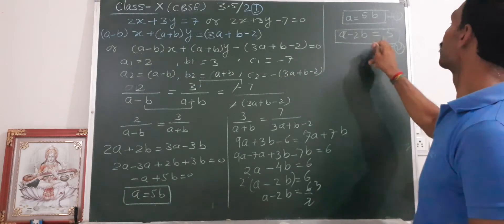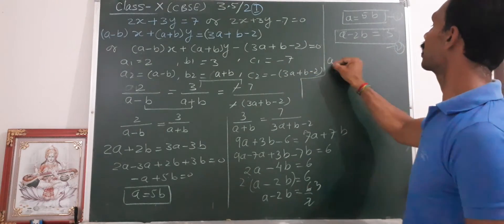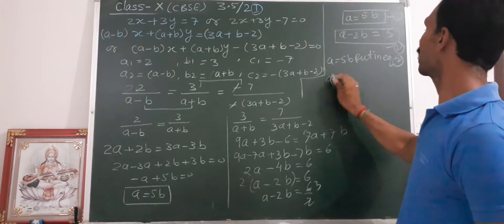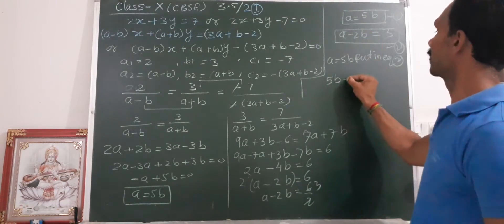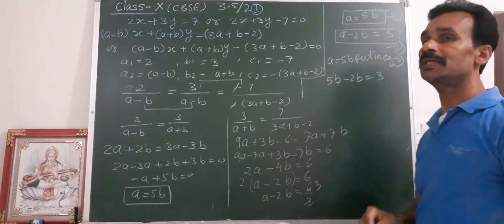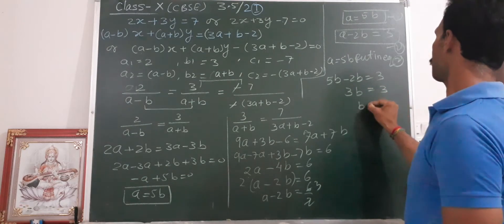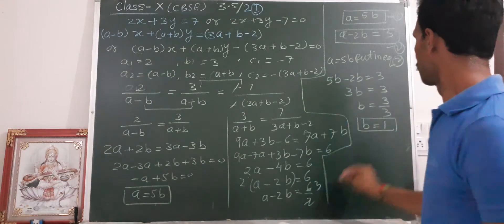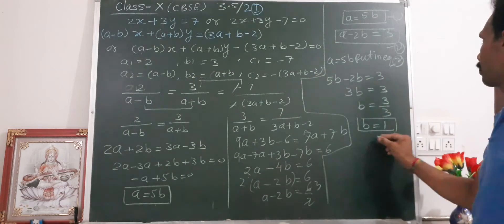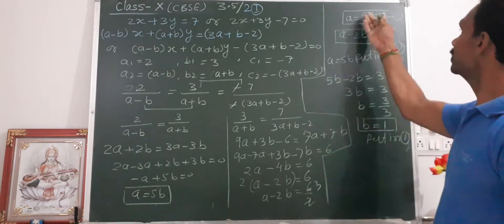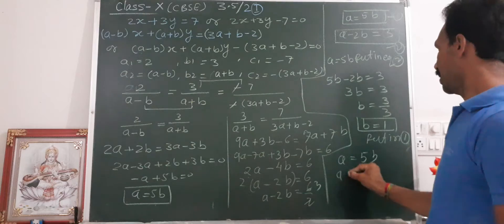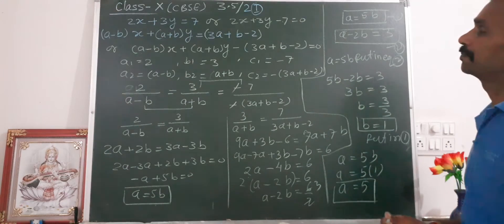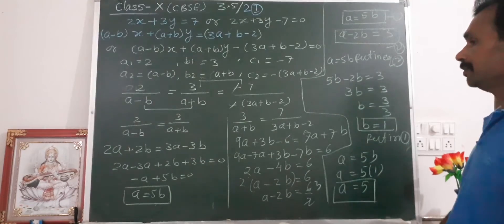Putting A equals 5B into equation 2: 5B minus 2B equals 3, so 3B equals 3, therefore B equals 1. Substituting B equals 1 back into equation 1: A equals 5B equals 5 times 1, so A equals 5. This is the value of A and B.